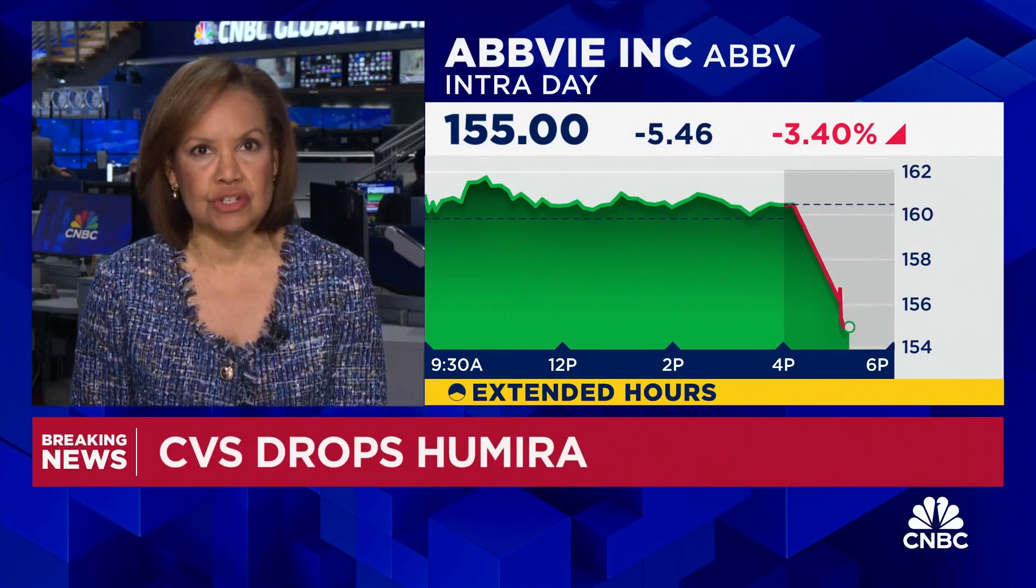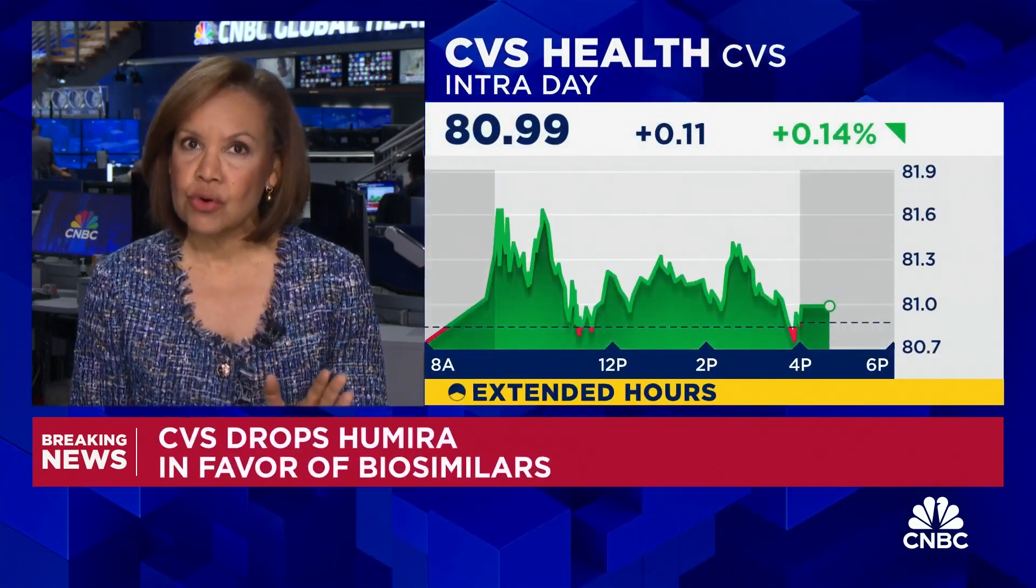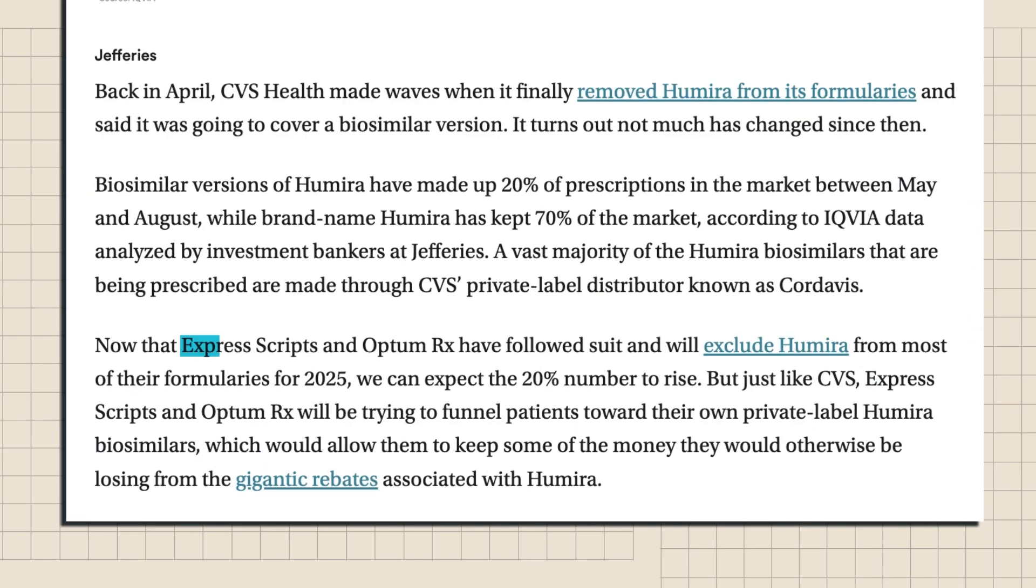In April 2024, CVS Health removed Humira from its formularies and promoted a CVS-made biosimilar version that brought down costs for patients. The two other largest PBMs in the US, Express Scripts and OptumRx, recently announced that they'll also remove Humira from their formularies in 2025 and replace them with their own label-made Humira biosimilars. This is all good news for patients looking for cheaper options, but it does pose a question of what exactly incentivizes a health plan to act in pursuit of lower costs for consumers.